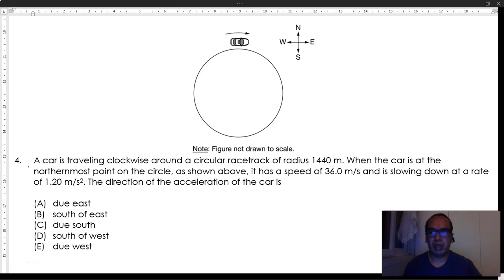slowing down at a rate of 1.20 meters per second squared. What is the direction of the acceleration of the car?